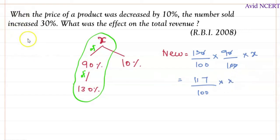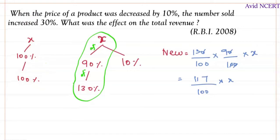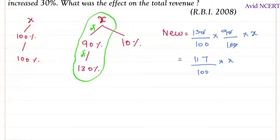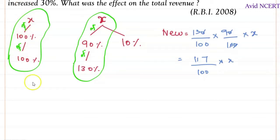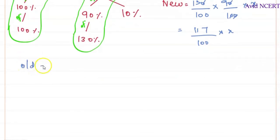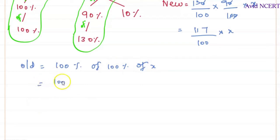So let the initial revenue be X, which would have been 100 percent because without the decrease in price, the sales would also be 100 percent. The initial revenue is 100 percent of 100 percent of X, so the old revenue equals X, which is 100 divided by 100 times 100 divided by 100 times X, simplifying to X.